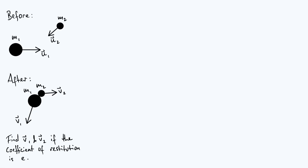In this video we're going to talk about the outcomes of collisions between spheres. We're going to consider spheres with arbitrary masses and arbitrary initial velocities, and we're going to consider both elastic and inelastic collisions by allowing there to be a coefficient of restitution between the spheres, which is somewhere in between 0 and 1.